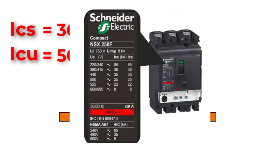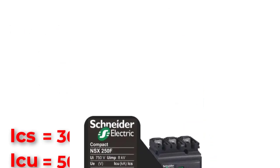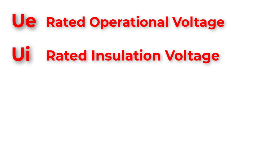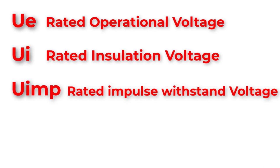On any MCCB nameplate, you will find the value of ICU in kilo-amperes at every operating voltage, and the value of ICS will be a percentage of ICU — it could be 60%, 80%, or 100%. Another important terminology is the rated operational voltage (Ue), rated insulation voltage (Ui), and impulse withstand voltage (Uimp).